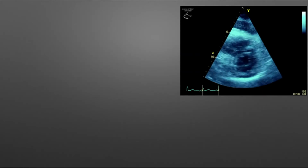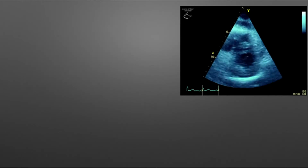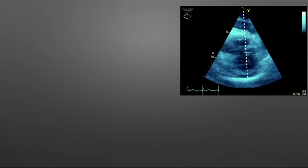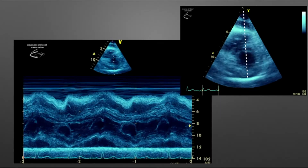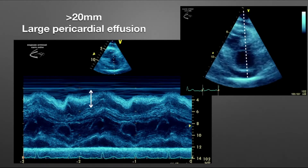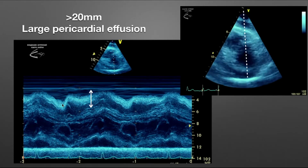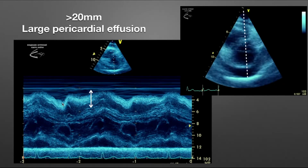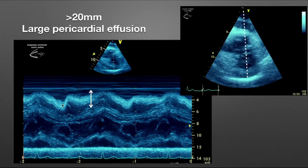I typically like to do this in the short axis plane. We drop the M-mode cursor line to bisect the left ventricle as accurately as we can, then put M-mode on. Here we can see the maximum diameter during diastole — the maximum distance between the pericardium and the right ventricle free wall — which is greater than 20 millimeters, suggesting this is a large pericardial effusion.